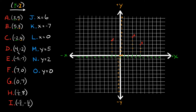Point D is at (4, -2). We move four spaces in the x-direction — 1, 2, 3, 4 — and then negative two spaces in the y-direction — negative 1, negative 2. So that spot is point D. Point E is at (-5, -7). We move negative five spaces in the x-direction — negative 1, 2, 3, 4, 5 — and then negative seven spaces in the y-direction — negative 1, 2, 3, 4, 5, 6, 7. So this point is point E.